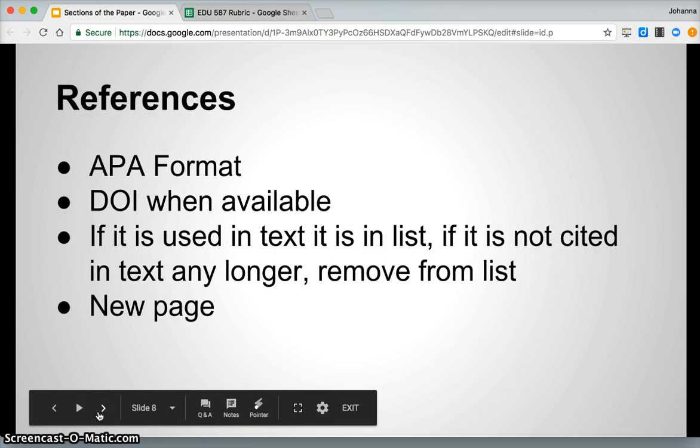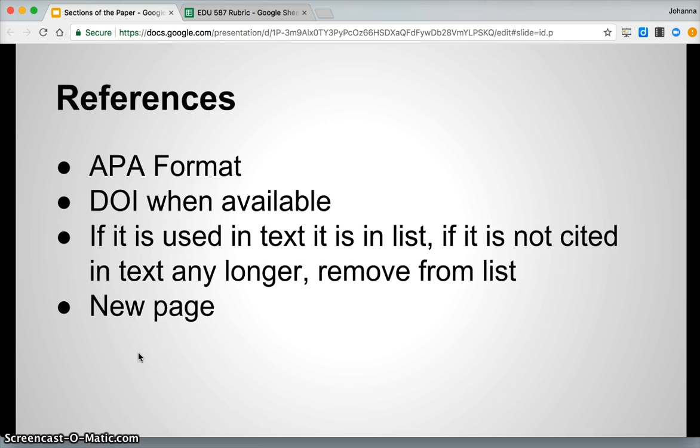The next section of the paper is the reference list. Remember, APA format, a DOI when available. If it's used in the text, it's in the list. If it's not cited in the text any longer, remove it from the list. And just a reminder, this starts on a new page.